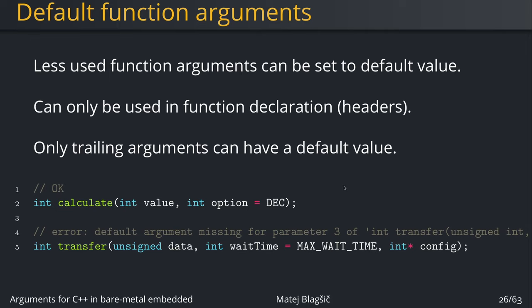But there's another catch: you can only use this for trailing arguments, meaning the last arguments in the list. And also, this can only be put in the function declaration. So if you have a function declaration in a header file, you can use that there, but in a function definition, you have to omit it.